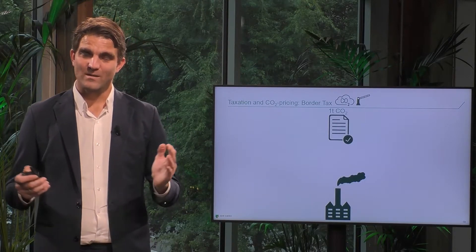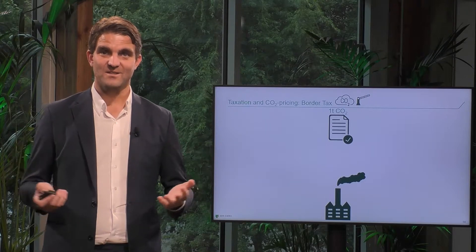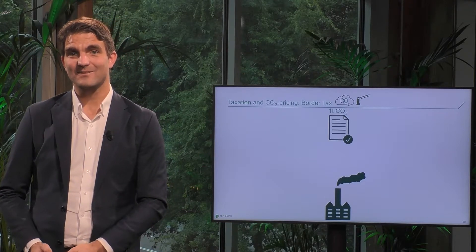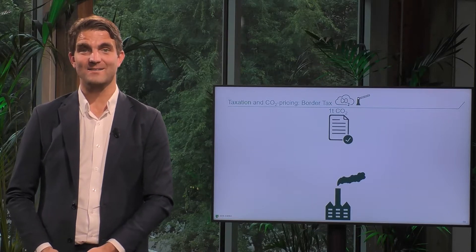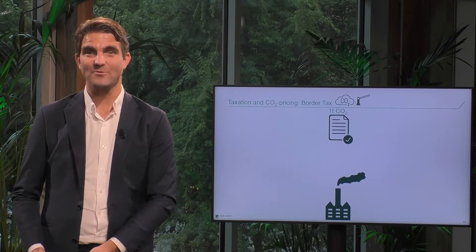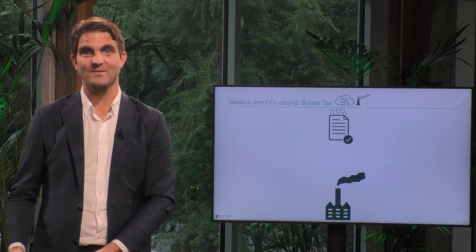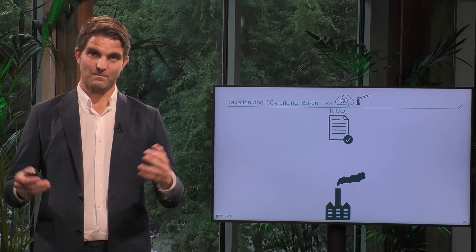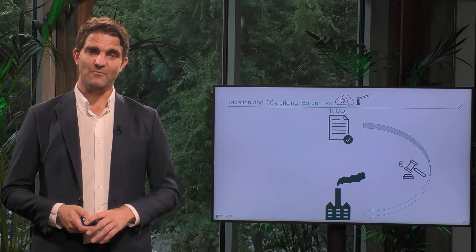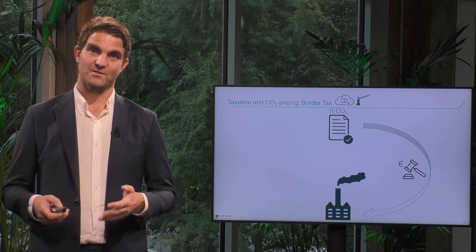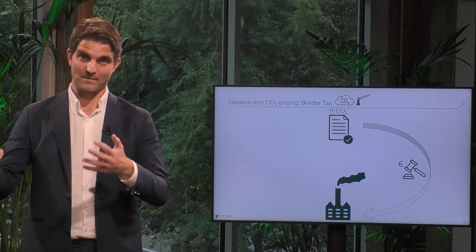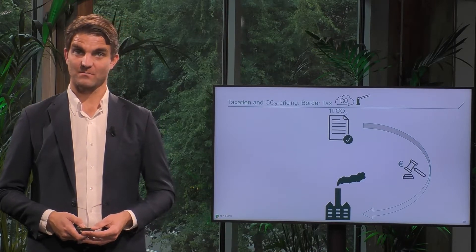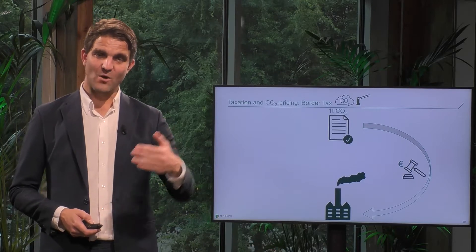So, emission allowances are becoming scarcer and the price is going up. The critical thing for companies that still emit CO2 is how to get their hands on the remaining emission allowances. There are two ways. First of all, they can go to auctions — auctions by member states — and buy emission allowances at the going rate.